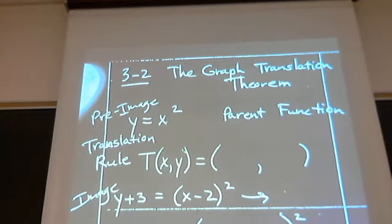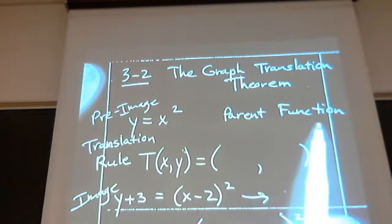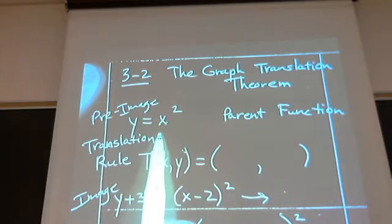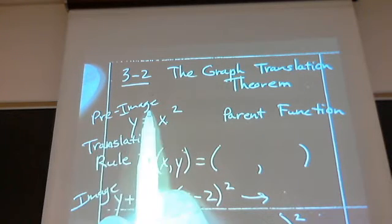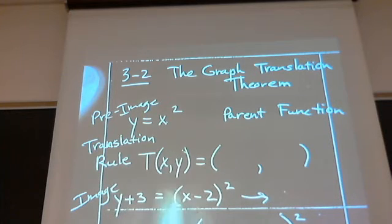The Graph Translation Theorem. We're talking about moving functions around. We're starting with these things called parent functions, of which y equals x squared is one of them. Sometimes they refer to this as a pre-image. Then we're going to be applying a translation rule.